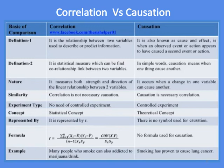In correlation, no controlled experiment is needed, while in causation, controlled experiments are required. Correlation is a statistical concept while causation is a theoretical concept.